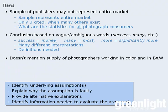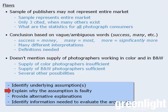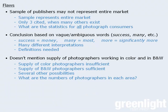Finally, for the last flaw, the underlying assumption is that the supply of photographers working in color is not sufficient. Related to this is the assumption that the supply of photographers working in black and white is sufficient. These assumptions are faulty because there are several possible scenarios involving the number of photographers working in either field. To help us evaluate the argument, we really need to know the supply of photographers in each field. At this point, we have enough discussion points to write our essay. We'll cover this in the next lesson.